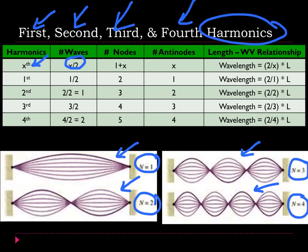The x-harmonic, the number of waves that it creates is x divided by 2. The number of nodes that it will have will be 1 plus x. The number of antinodes is exactly the same as x. And the wavelength of it is going to be 2 divided by x times the length of the entire string.